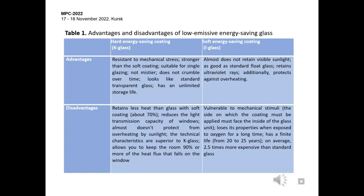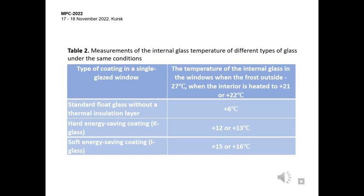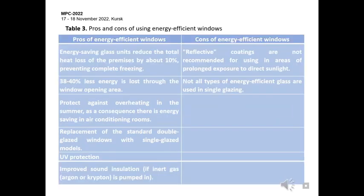Table 1 shows the advantages and disadvantages of hard energy saving coating and soft energy saving coating. Table 2 shows the internal glass temperature measurements for different types of glass under the same conditions. From the table you can see that standard windows retain heat worse than energy saving glass. If we compare between the energy saving glass, the I glass has better performance than the K glass.